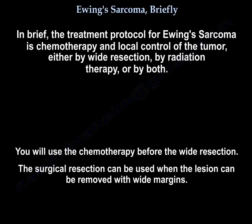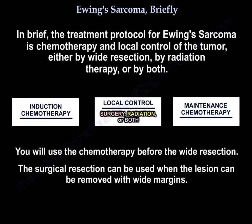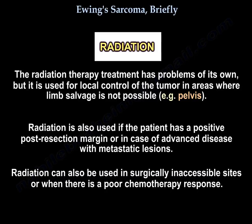In brief, the treatment protocol for Ewing is chemotherapy and local control of the tumor, either by wide resection or by radiation therapy, or by both. You will use the chemotherapy before the wide resection. The surgical resection can be used when the lesion can be removed with wide margins. Radiation therapy is used for local control of the tumor in areas where limb salvage is not possible, if the patient has a positive post-resection margin, in case of advanced disease with metastatic lesions, in surgically inaccessible sites, or when there is a poor chemotherapy response.